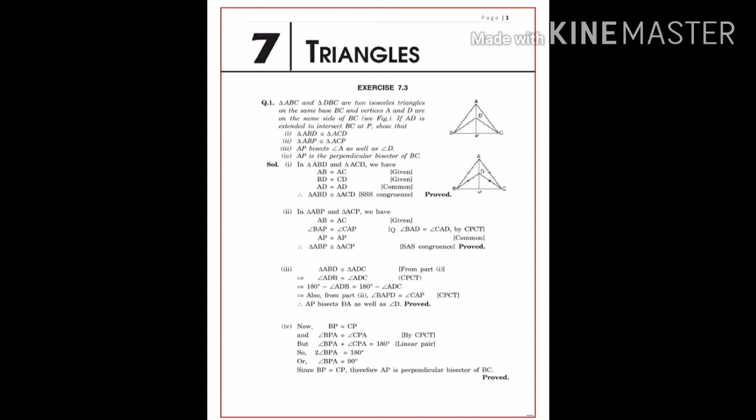Solution No. 1: In Triangle ABD and Triangle ACD — AB equals AC, this is given because the triangle is isosceles, so the opposite sides are equal. BD equals CD, this is also given in the question. And AD equals AD, common in both triangles. So by the SSS criterion, Triangle ABD is congruent to Triangle ACD.